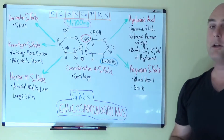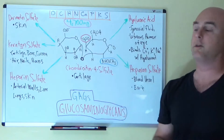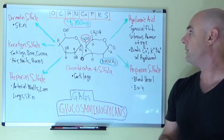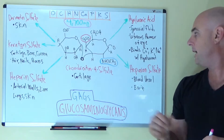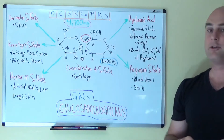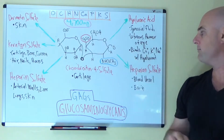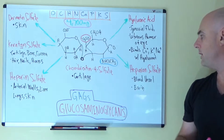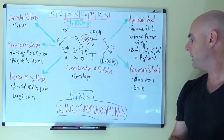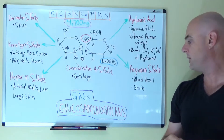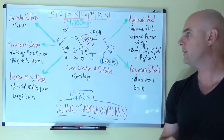And hyaluronic acid — this actually doesn't use sulfur, but it's found in the synovial fluids and in the eye, and it helps bind calcium, potassium, and sodium with hyaluronate. And then finally, we have heparin sulfate, which is found in the blood vessels and the brain.